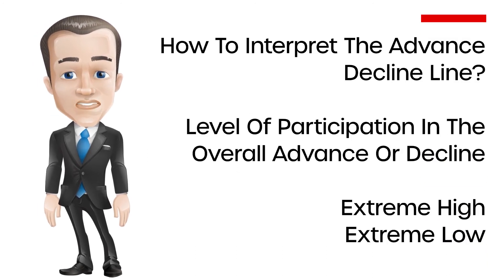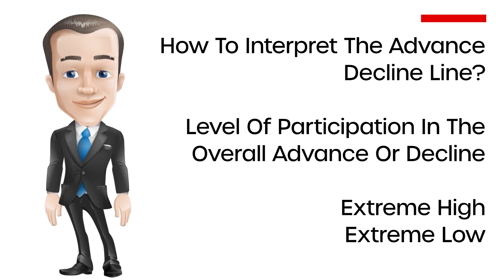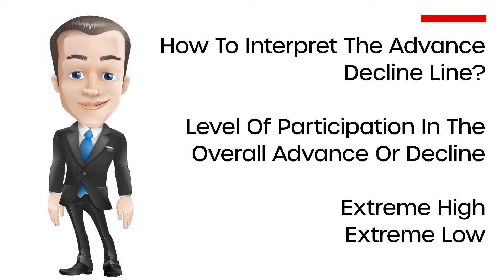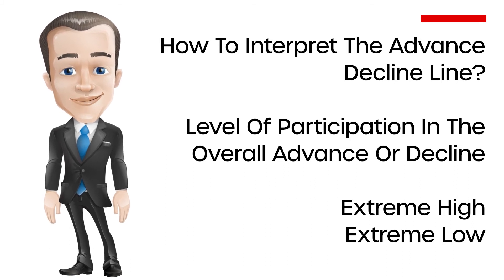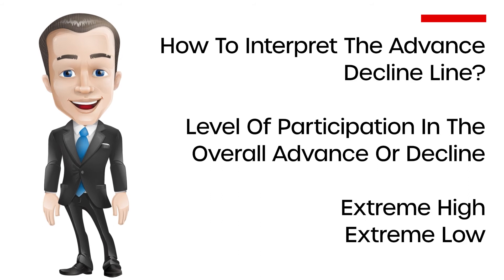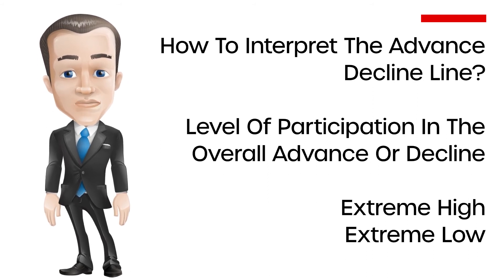Interpreting the advance-decline line: the AD line shows the level of participation in the overall advance or decline of stocks. When the AD line starts to rise and posts an extreme high, it signals bullish participation and continuation. When it posts a new extreme low, it signals bearish participation. Based on the AD line, traders can time entries by determining the trend — it is typically not recommended to buy when the AD line is falling. Market bottoms often coincide with the AD line starting to bottom and beginning to rise, especially at extreme levels. If a stock is making a new high but the AD line is not confirming, it can signal the stock is likely to correct.